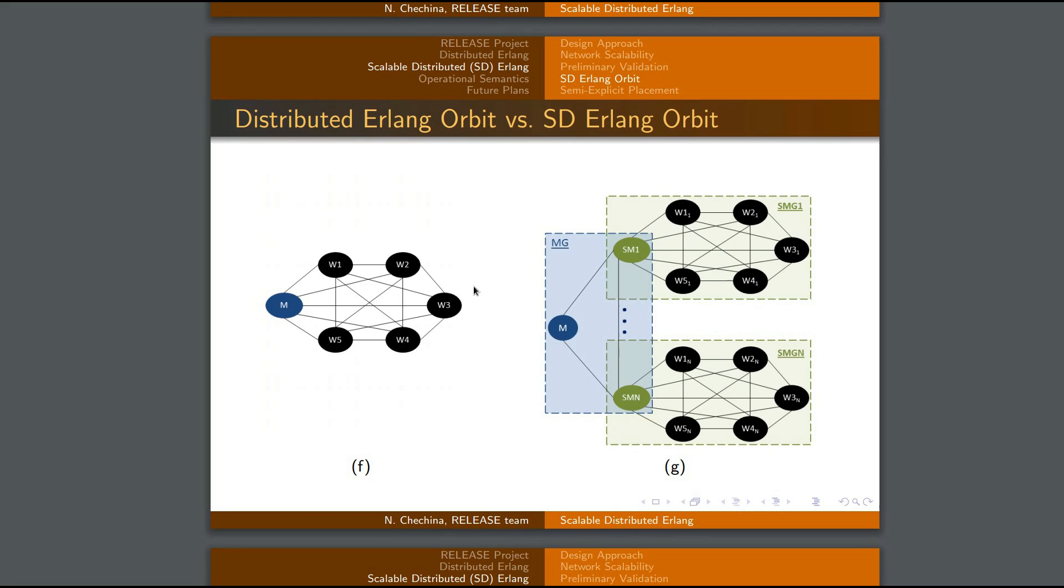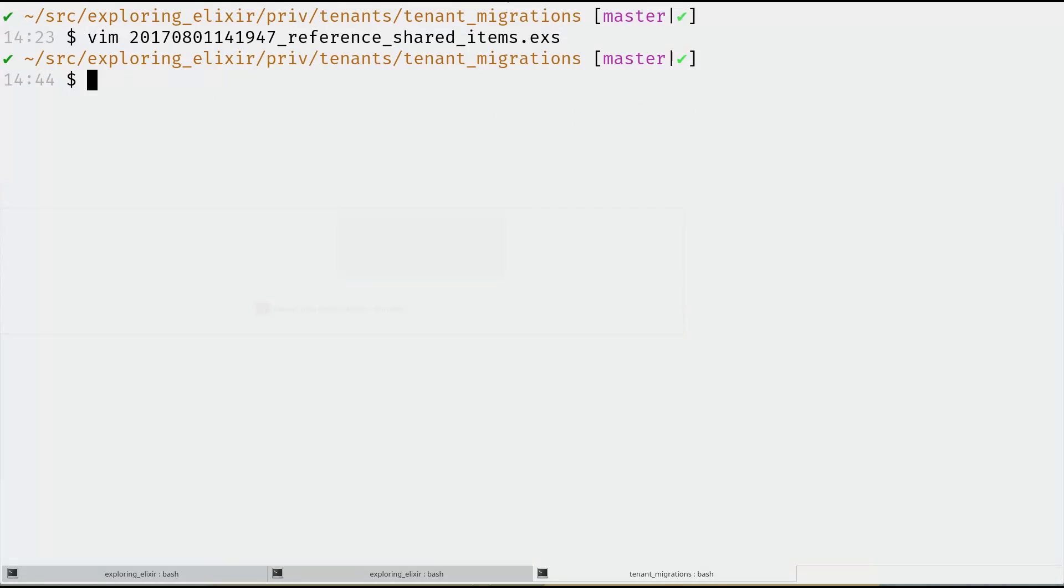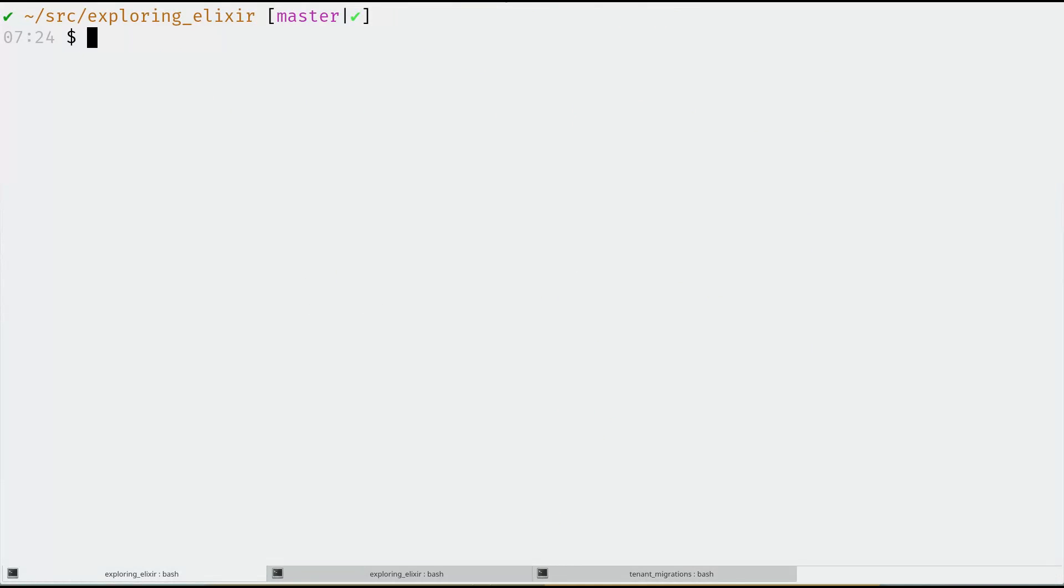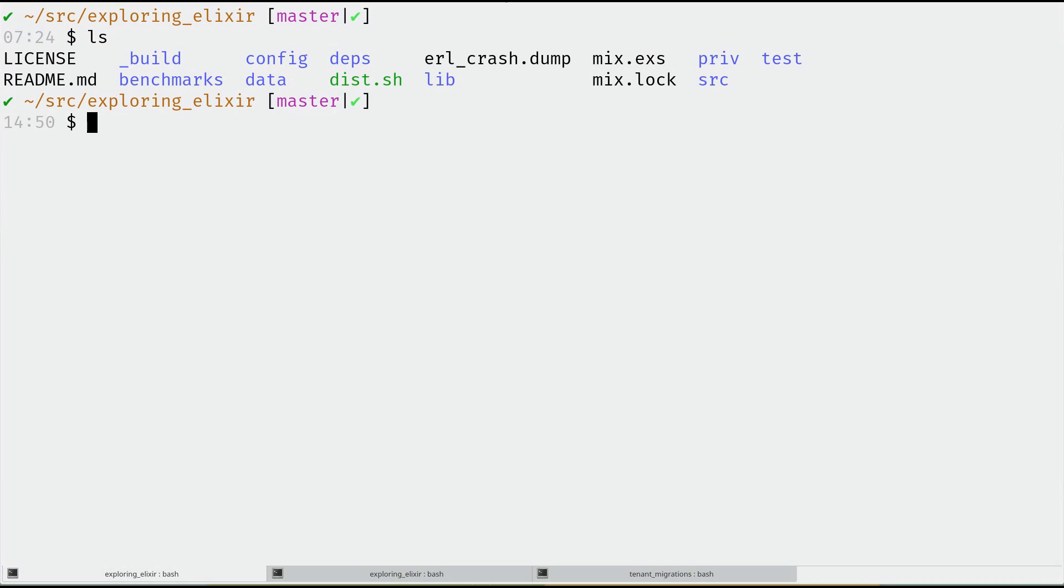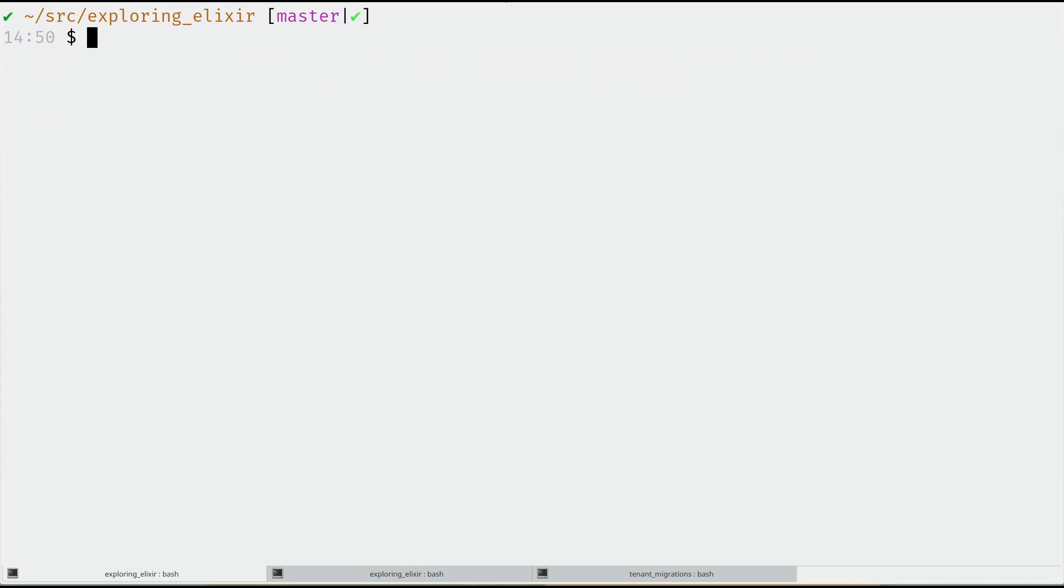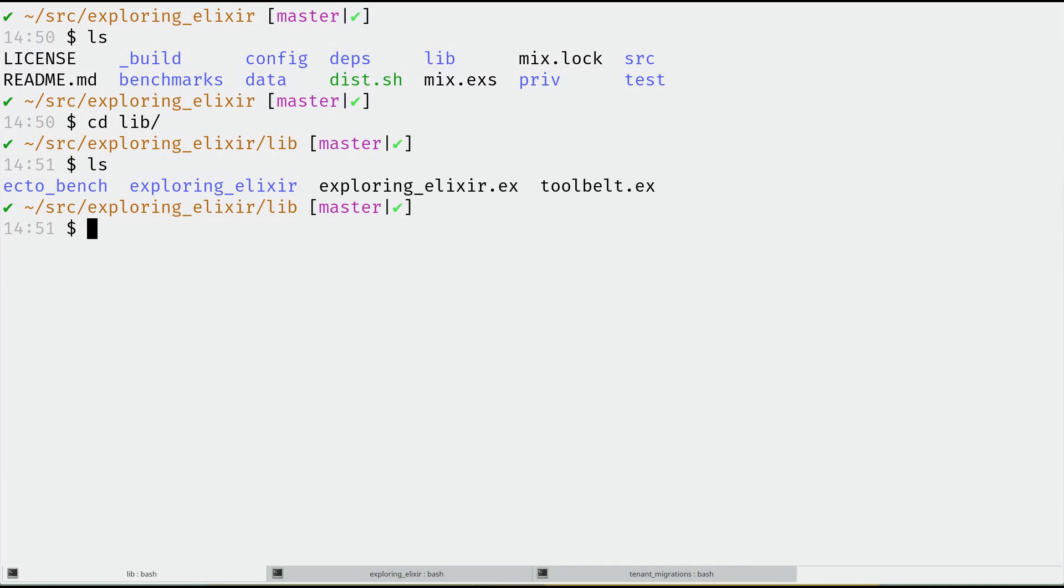So those are the three things I or two of the three things I want to talk about. And the last thing I wanted to mention was a little bit about the Git repository itself. So I've been kind of playing with how I want the Git repository that goes along with exploring Elixir to be laid out. So at the top level, it looks like pretty much any other Elixir project, I'll actually remove the dump there.